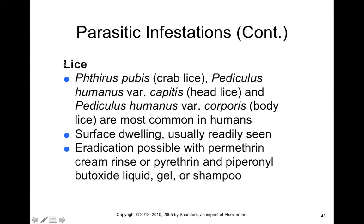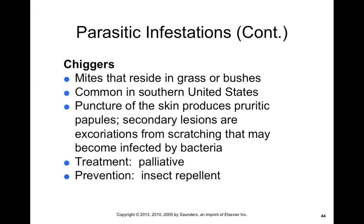Chiggers are mites that reside in grass or brush. They're common in the Southern United States, and puncture of the skin produces itchy papules. The chiggers actually stay within your skin, and scratching and excoriations can occur from your immune reaction. Unfortunately, this can put you at risk for bacteria, leading to a secondary infection with staph, strep, or other microorganisms. Treatment for this is palliative — there's no treatment other than just making sure someone feels comfortable until the chigger leaves your skin. Prevention includes insect repellent and wearing proper clothing so you don't have exposed skin to grass or brush.